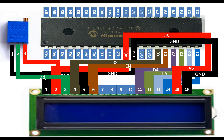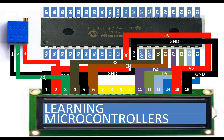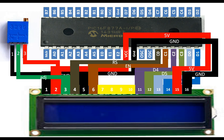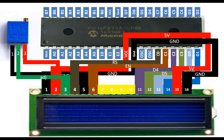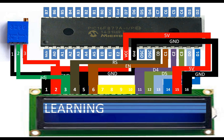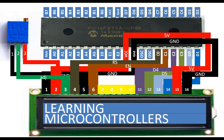Now our connections are done. After this I'm going to program it. First, the program will display 'Learning Microcontrollers' on the screen. Then I will modify the program so it keeps blinking. Finally, I will program it so 'Learning' appears on the first line and 'Microcontrollers' appears on the second line. Let's first go to the Proteus demonstration before we get to programming.